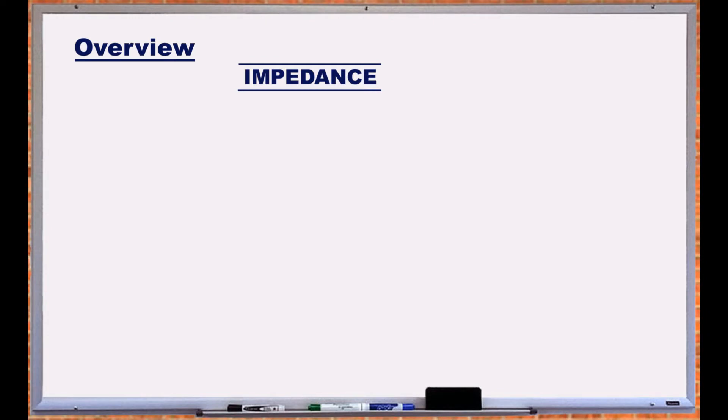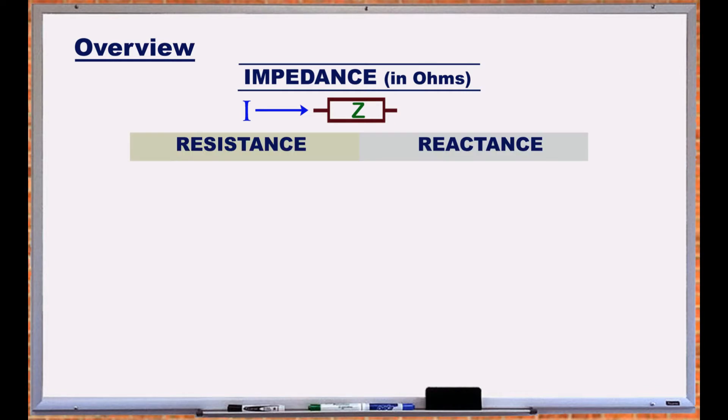Impedance is the opposition that a component presents to the electrical current flowing through it. It is denoted by the letter Z and is measured in ohms. Impedance is made of two parts: resistance and reactance.